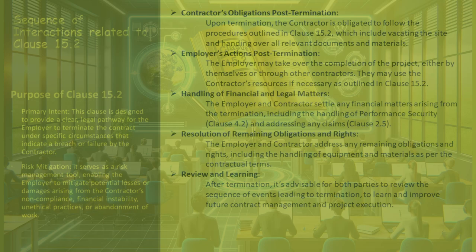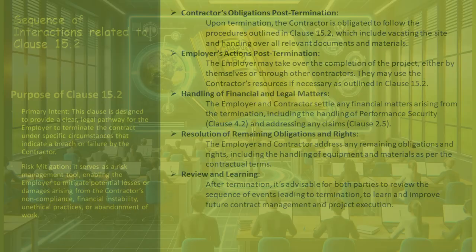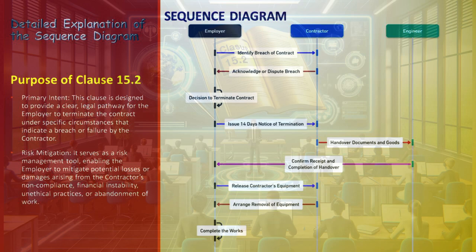The employer and contractor address any residual obligations and rights, including the disposition of equipment and materials as per the contract. After the termination, it is beneficial for both parties to review the events leading to the termination to glean lessons for future contract management and project execution. This detailed sequence outlines the structured approach required for the effective implementation of Clause 15.2, ensuring a fair and legally compliant process. The sequence diagram begins with the employer recognizing a breach of contract by the contractor, ranging from non-compliance with performance security to failing to progress with the works.